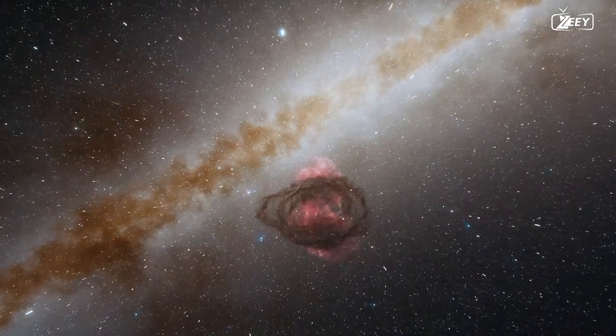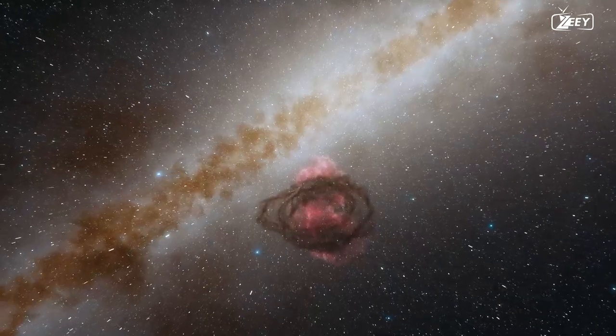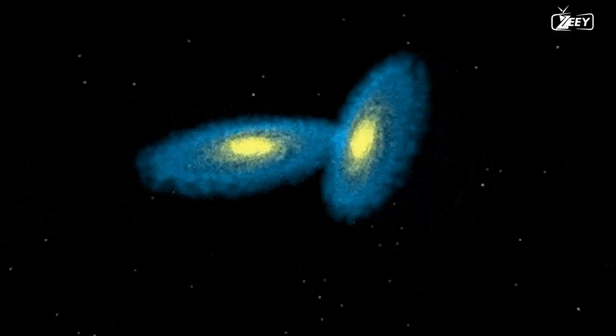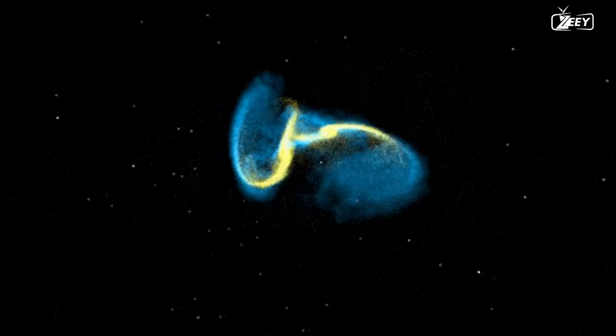Thus, a Doppler shift toward the red portion of the spectrum indicates that the object is moving away from us. On the other side, a blue shift in the stellar object lines indicates that it is moving toward our line of sight.